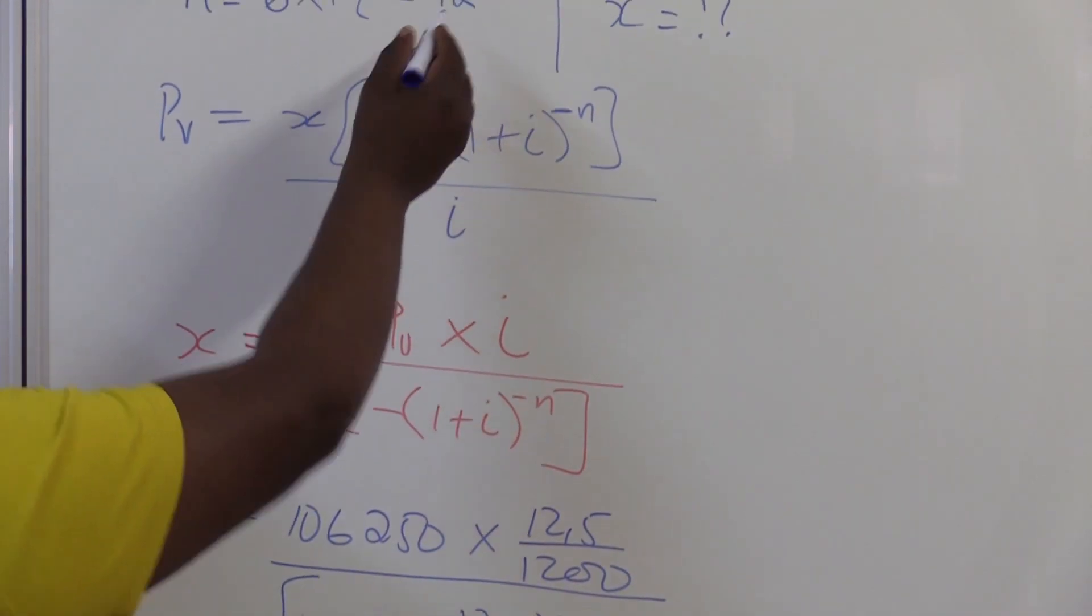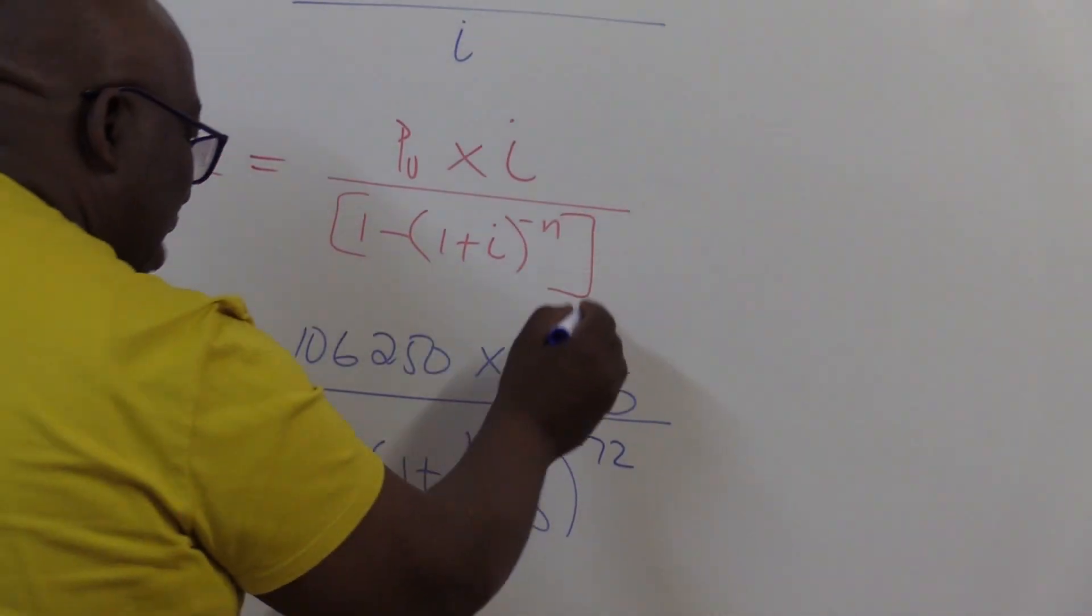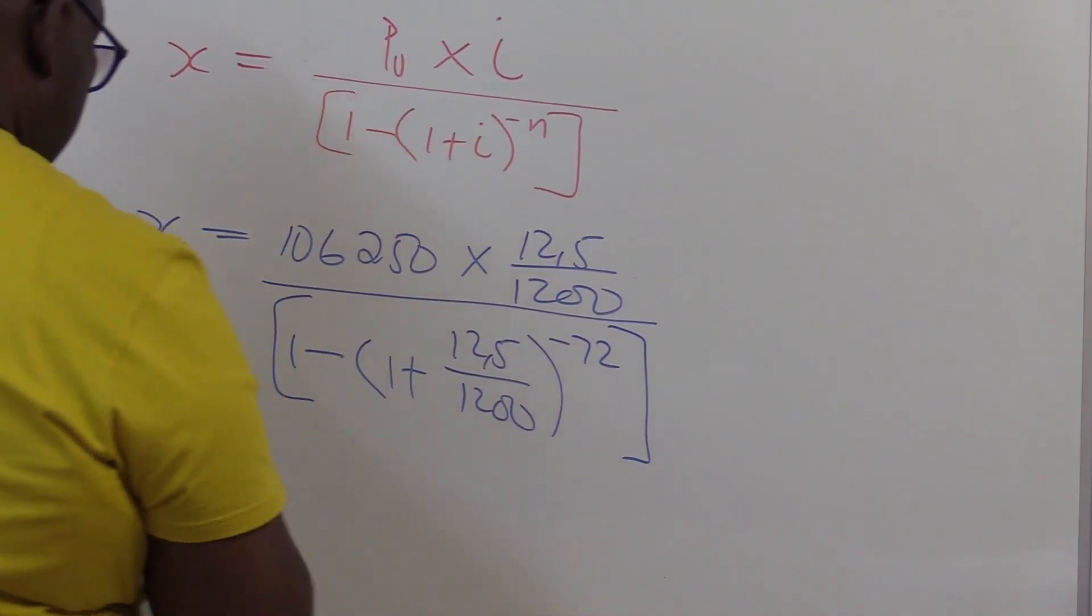What is our N in this particular case? Well, 6 times 12, which gave us 72. Don't forget to close the bracket.